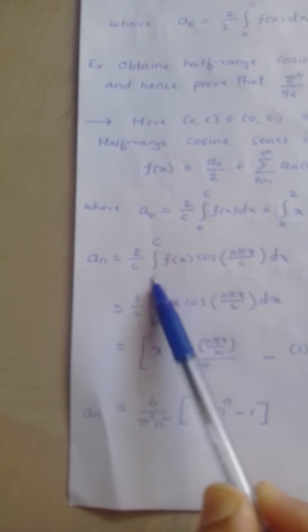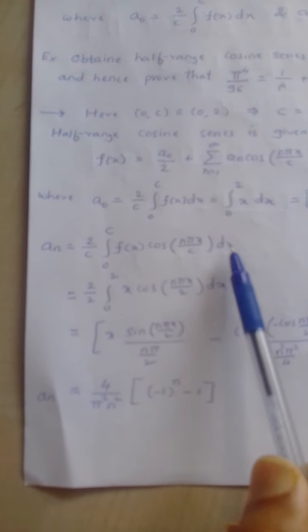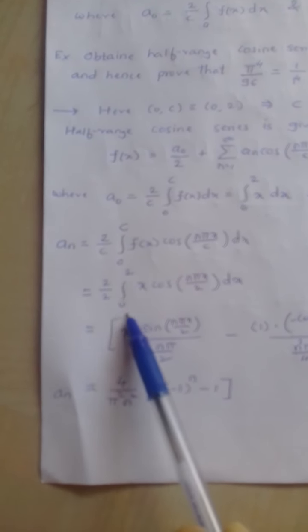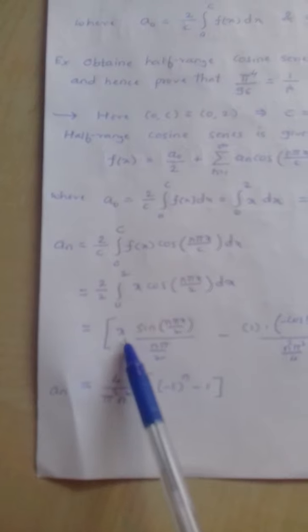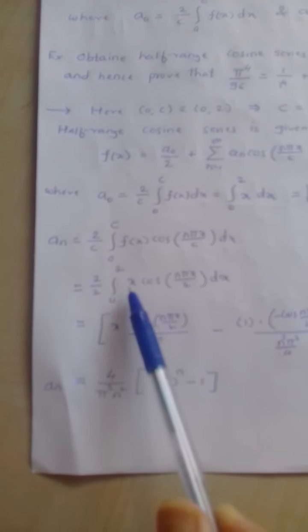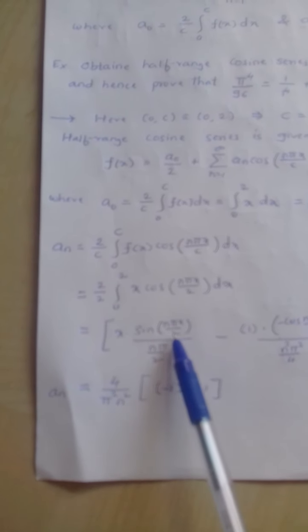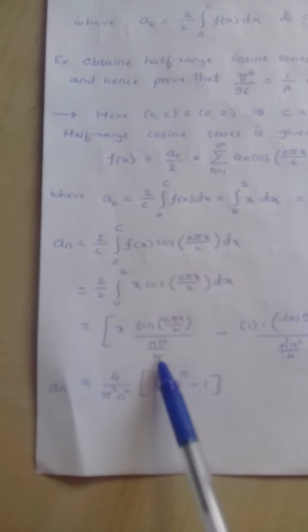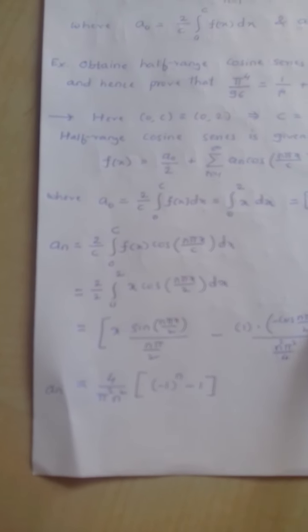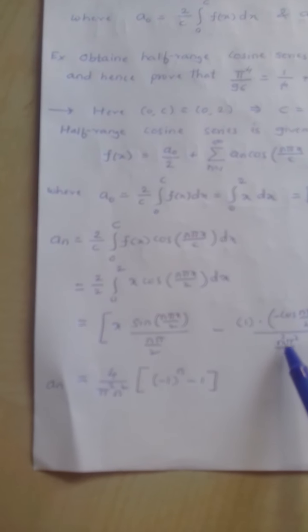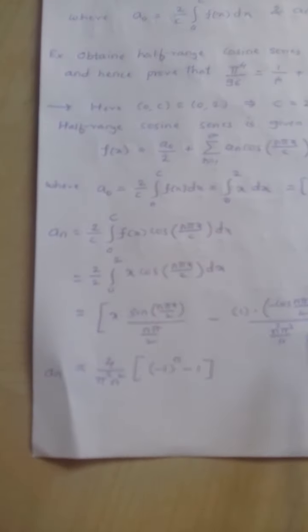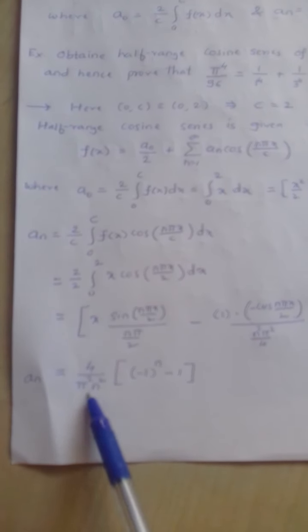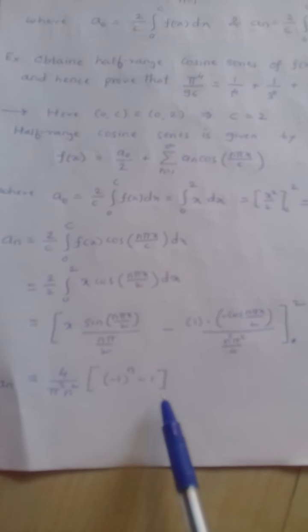Now we find aₙ: aₙ = (2/c) × integral from 0 to c of f(x) cos(nπx/c) dx. Substituting c = 2 and f(x) = x, this becomes (2/2) × integral from 0 to 2 of x cos(nπx/2) dx. The two cancels. Using the generalized by-parts rule, this becomes x × sin(nπx/2)/(nπ/2) minus (−1) × (−cos(nπx/2))/(n²π²/4), evaluated from 0 to 2. After substituting limits and simplifying, aₙ = (4/(π²n²)) × (−1)^(n−1).